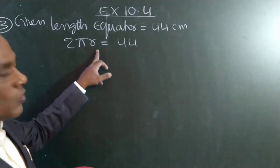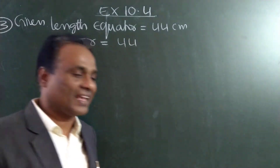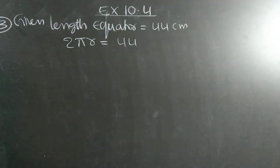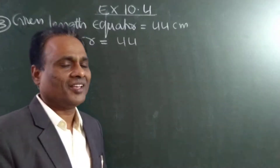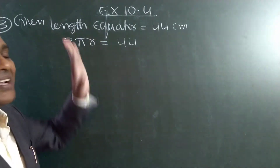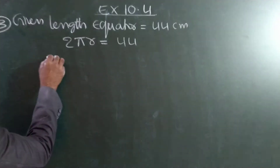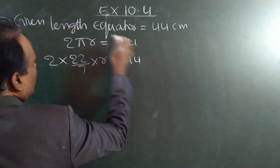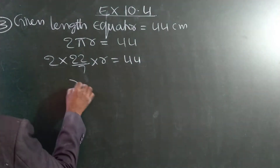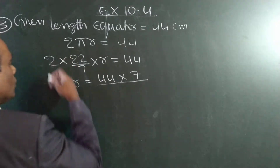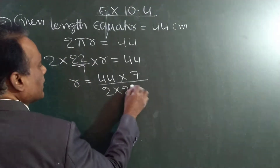Perimeter of the circle formula is 2πr. So 2πr is equal to 44. The equator — you will get this in social studies, so there is a small misunderstanding. Equator length is nothing but 2πr, so 2πr is equal to 44. Now, 2 into π is 22/7, so 2 × (22/7) × r = 44. So r is equal to 44 × 7 in the numerator, divided by 2 × 22 in the denominator.